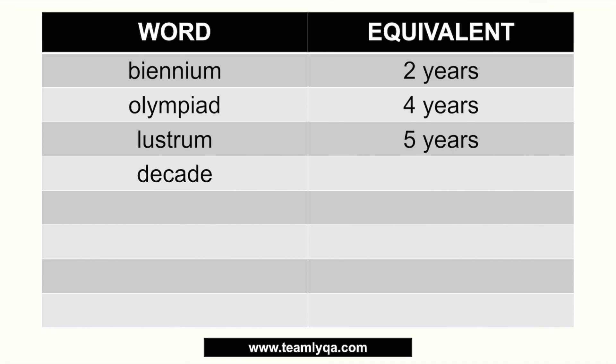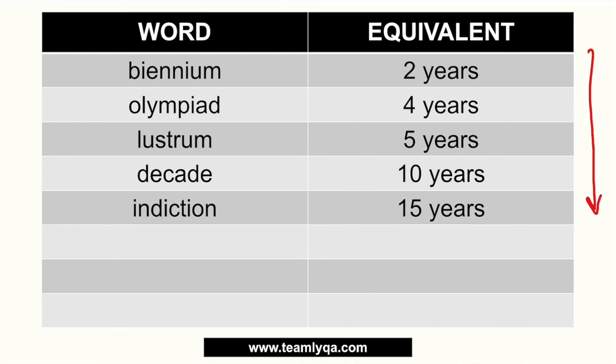Next is the decade. I think all of you know that — the decade of the 70s, the decade of the 80s. The decade is ten years, and that's obvious. We have an indiction, which is less common. But if you follow what happened in Rome — the succession usually for cardinals, popes and such — that's where it's usually used. It's a specific amount of time which is 15 years. I arranged these in increasing value so you can visualize them when you try to recall them.